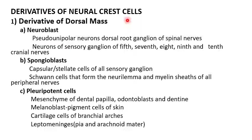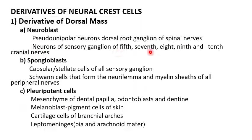Derivatives of the neural crest cells — dorsal mass: from the dorsal mass we get neuroblast cells, spongioblast cells, and pluripotent cells. The neuroblast cells form the pseudo-unipolar neurons of the dorsal root ganglion of the spinal cord, and also the neurons of the sensory ganglia of the 5th, 7th, 8th, 9th, and 10th cranial nerves. Spongioblast cells form the capsular or stellate cells of all sensory ganglia. Schwann cells form the neurilemma and myelin sheaths of all peripheral nerves.